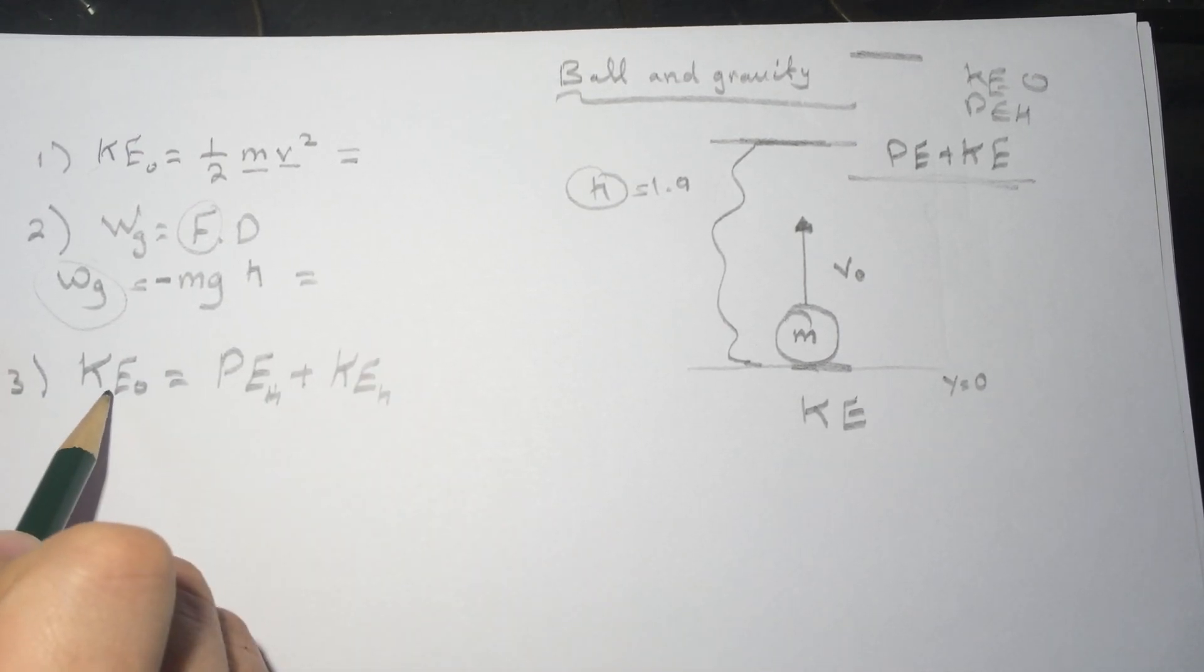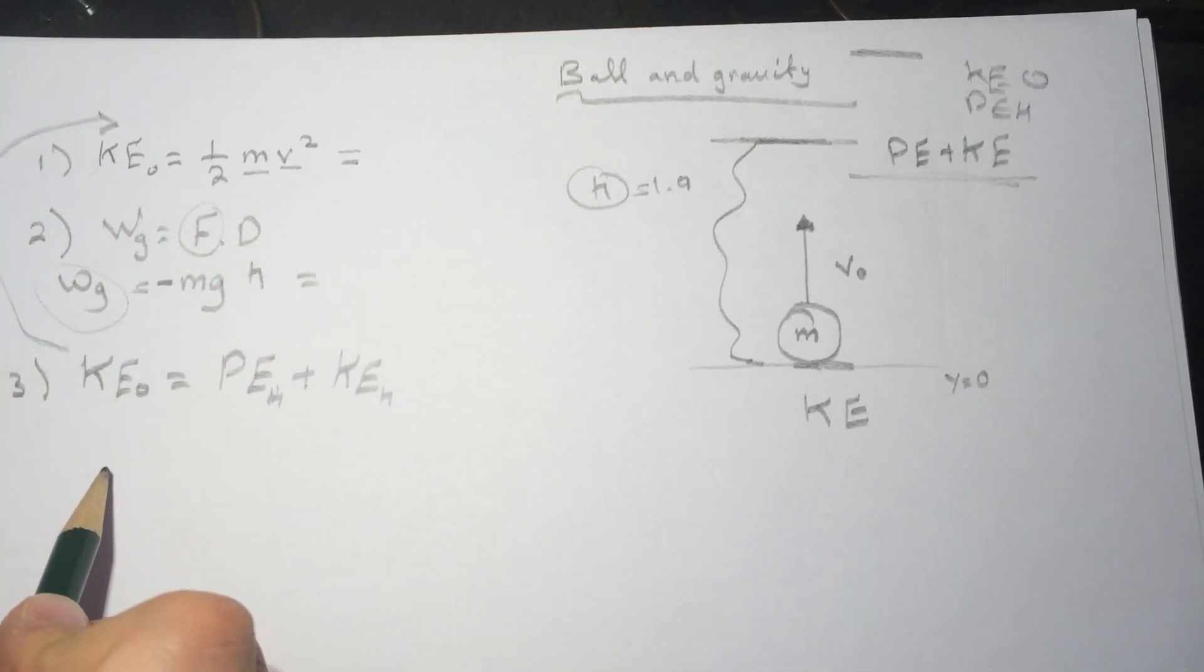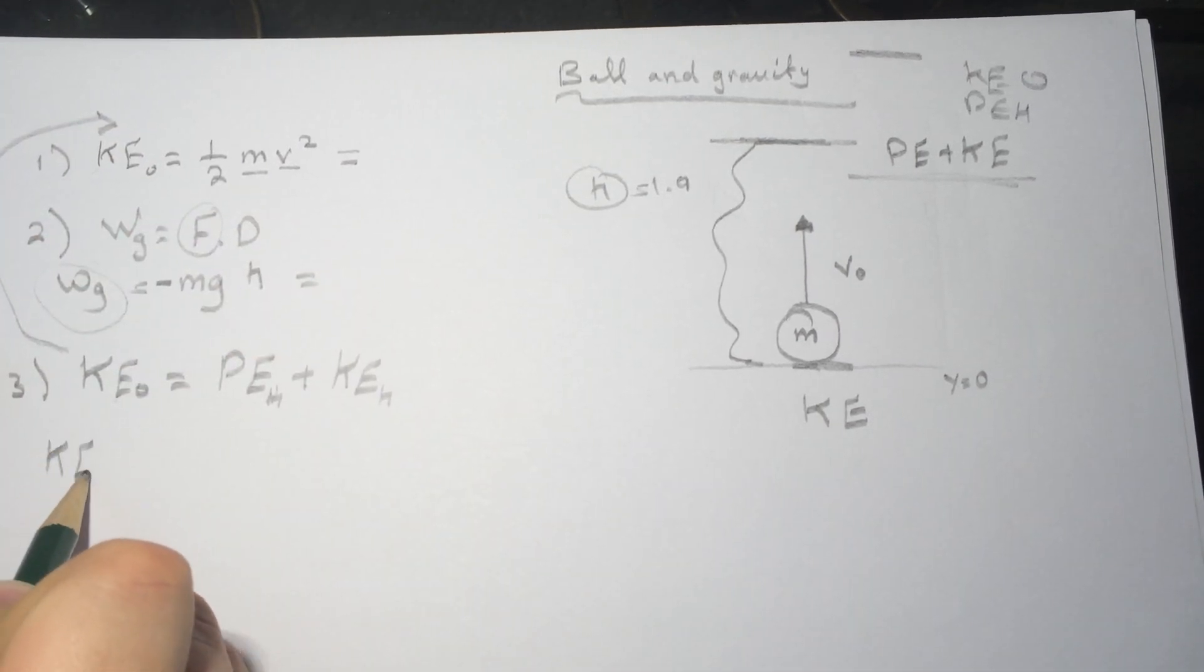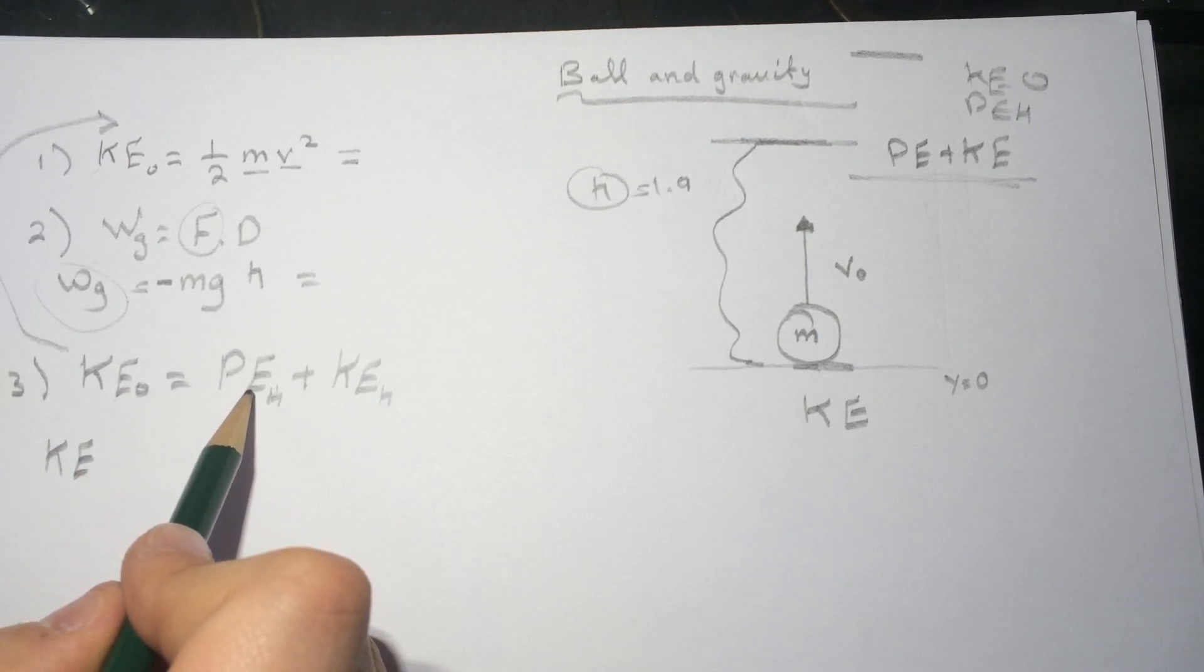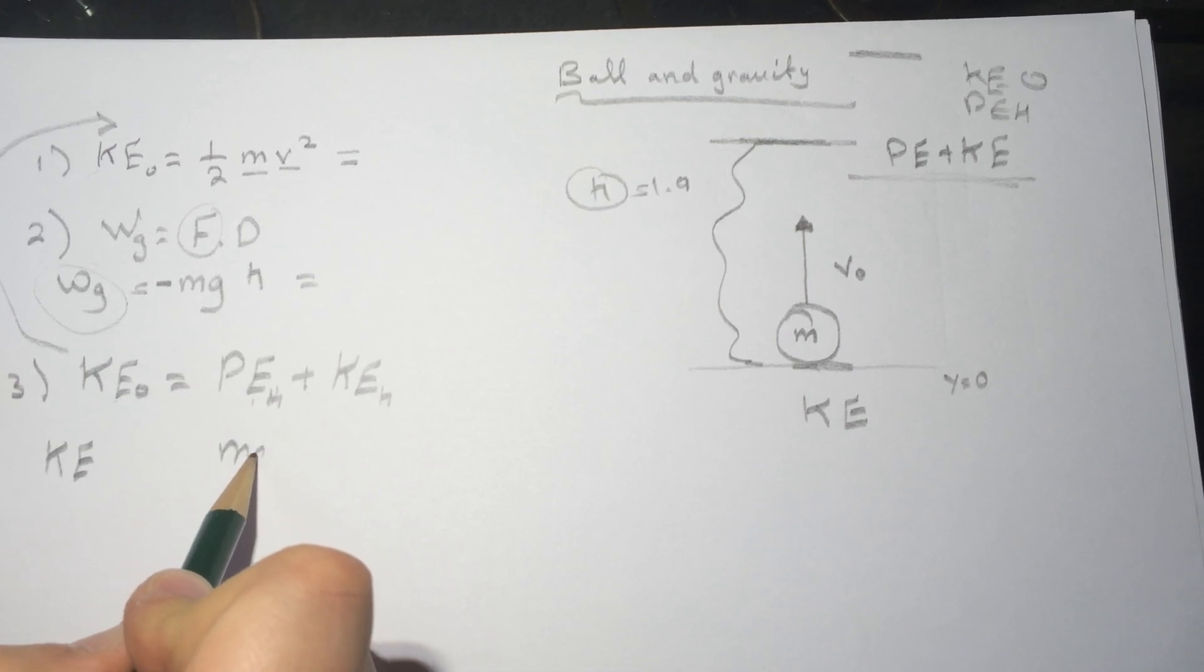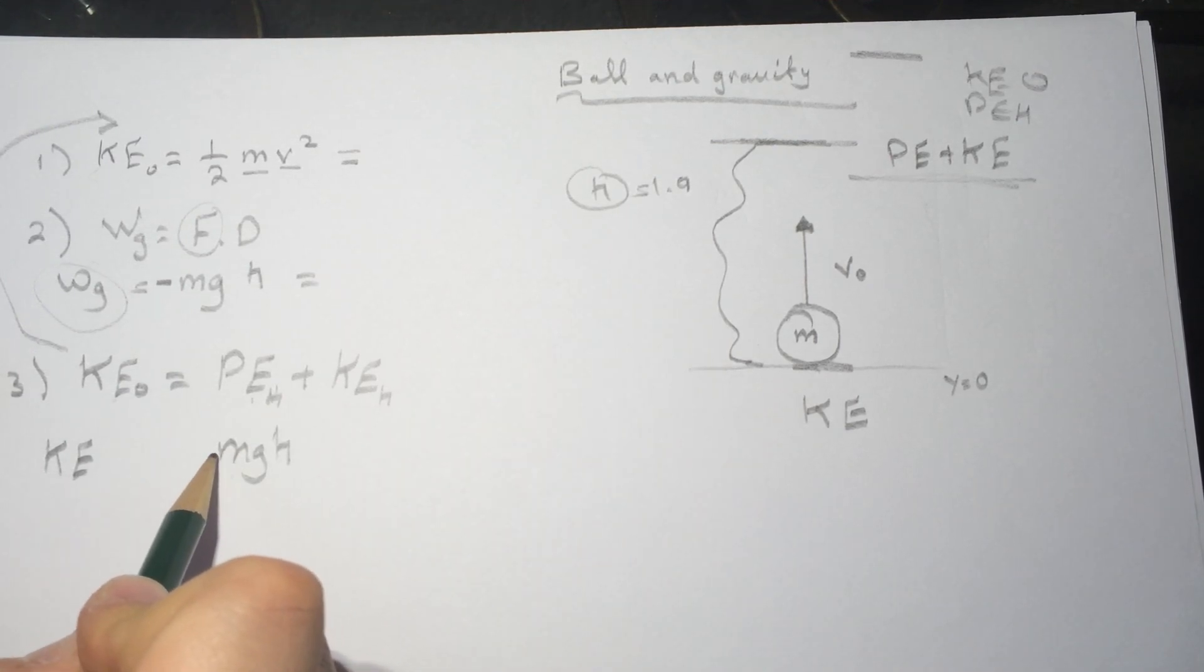The KE is the one we found here in question number one, and then this one here will be mgh. And this time it's positive because we're talking about energy now. So when we take it